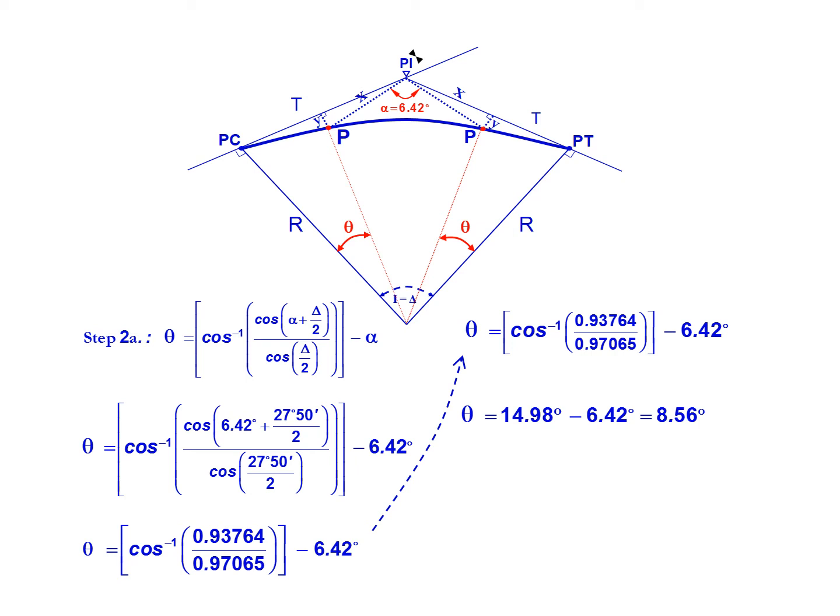Our value for delta is 27 degrees 50 minutes. After simplifying, we get theta equals the inverse cosine of 0.93764 divided by 0.97065.